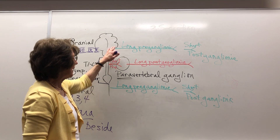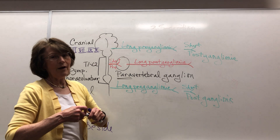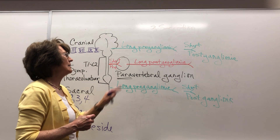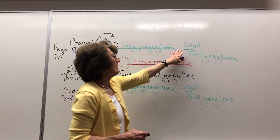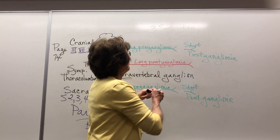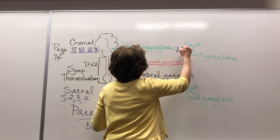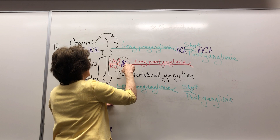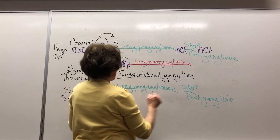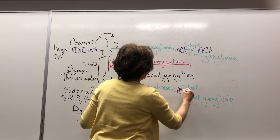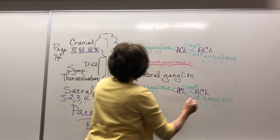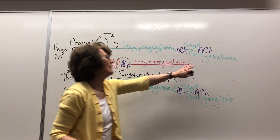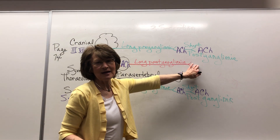The parasympathetic has a long preganglionic. What we need to recognize is what's the neurotransmitter. Acetylcholine is at every synapse except one. What's the neurotransmitter at that remaining one?